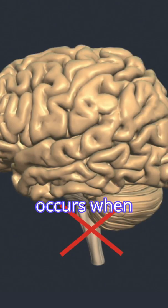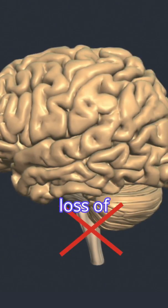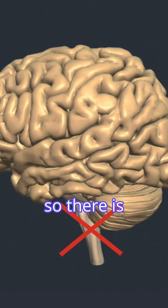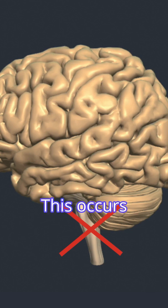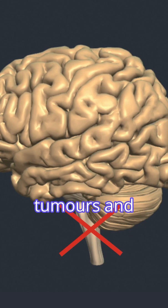Brainstem death occurs when there is irreversible loss of brainstem functions, so there is no potential for regaining consciousness and for breathing without support. This occurs due to loss of oxygen or blood supply to the brainstem, which can be caused by strokes, head injuries, brain tumors, and more.